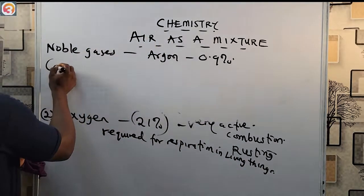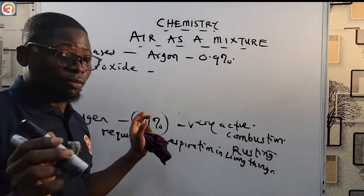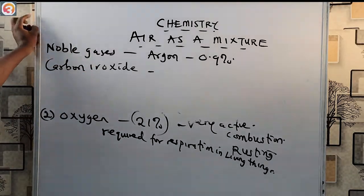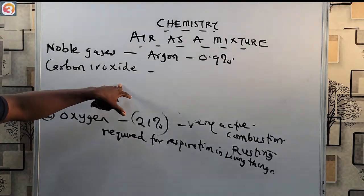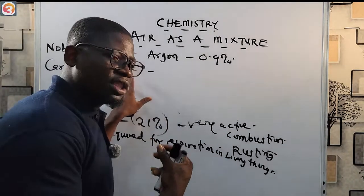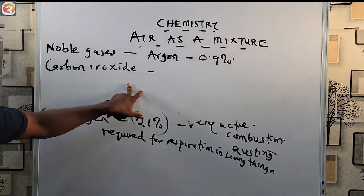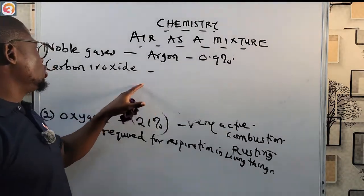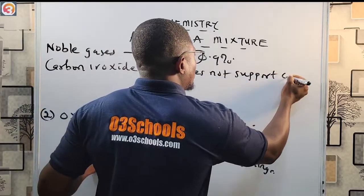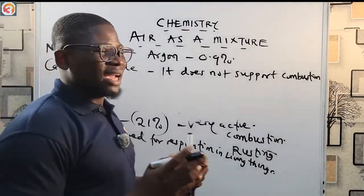Now let us look at carbon dioxide, also called carbon(IV) oxide. Carbon(IV) oxide does not support combustion in any way. It is mainly produced due to respiration in plants and animals. For example, we breathe in oxygen and release carbon dioxide. It is produced during respiration in both plants and animals. Carbon dioxide does not support combustion, and that is why it can be used as a fire extinguisher.